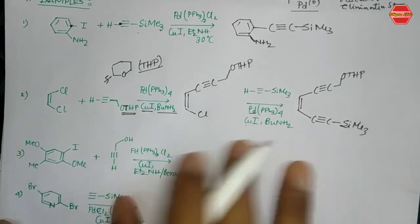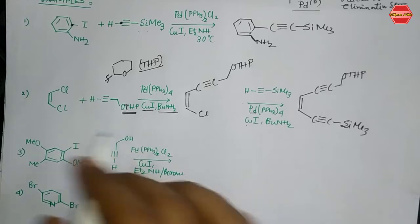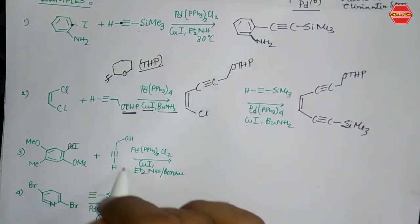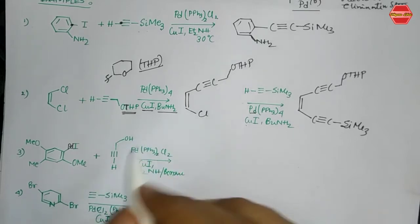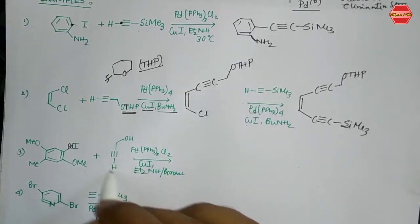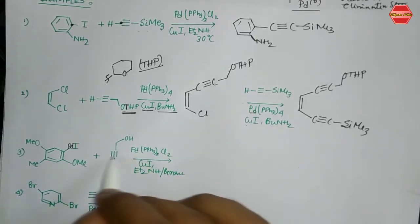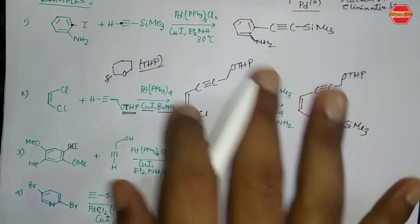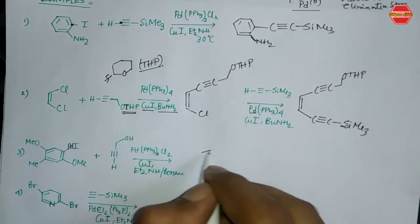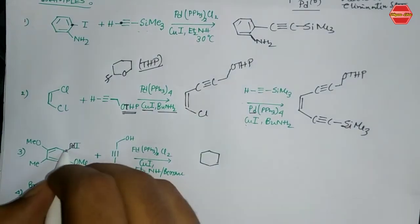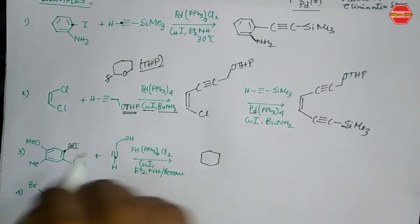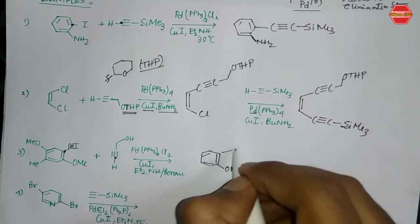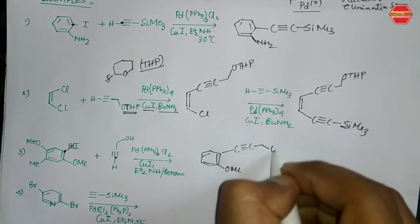In the third example, a similar mechanism is followed. Palladium attaches to the iodine center first via oxidative addition. After transmetallation, the terminal hydrogen of the alkyne is removed and copper is placed on the alkynyl carbon. After reductive elimination, the two carbons are bonded to each other, giving the final product as the major product.